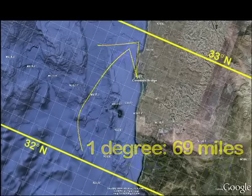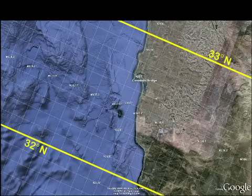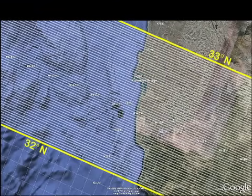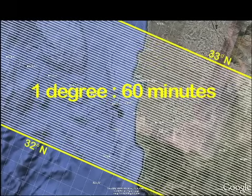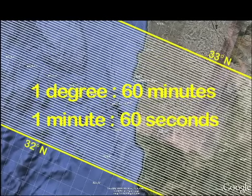Each degree of latitude is separated into smaller pieces called minutes. There are 60 minutes in one degree. Similarly, each minute is divided into 60 seconds.